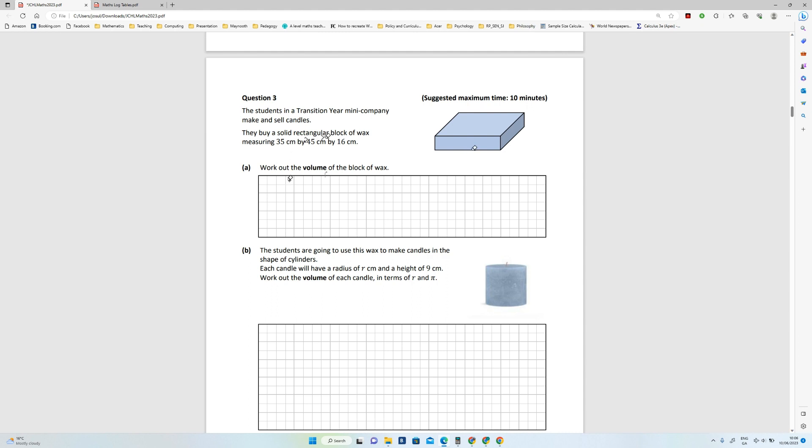Okay, so they've given you the three sizes, you just need to work out. So that can be 45, this one here can be 35, and this one can be 16. So the volume is 45 by 35 by 16.